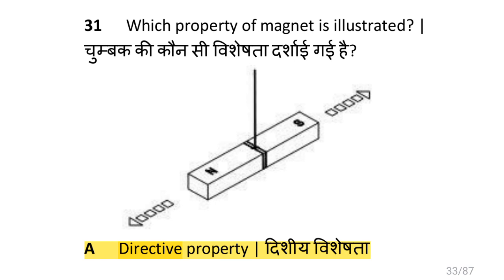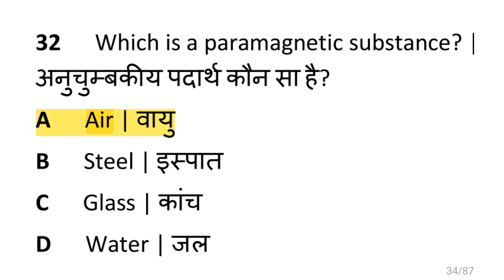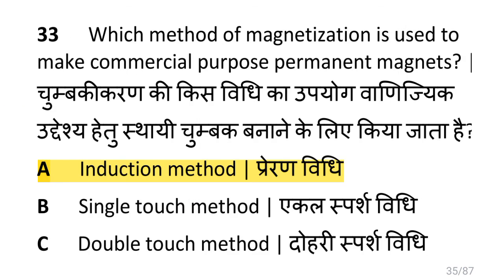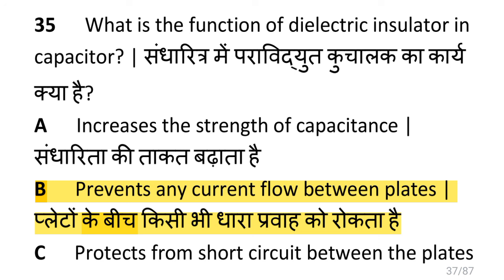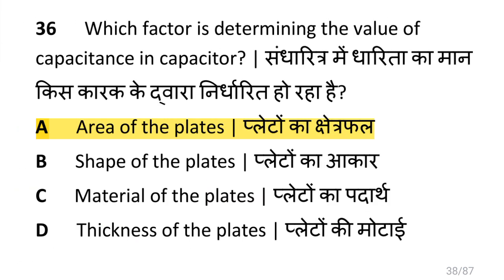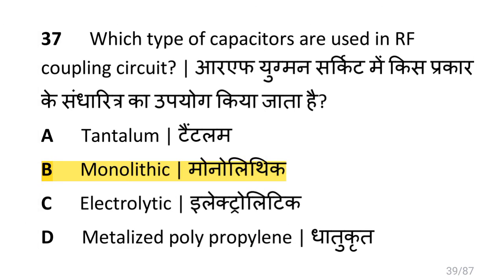What will be the change in the value of capacitance if the distance of the plates is decreased in the capacitor? The value of capacitance increases. Which property of a magnet is illustrated by like poles repelling? That is the direct same property. Which is a paramagnetic substance? That is air. Which method of magnetism is used to make commercial permanent magnets? That is the induction method. What is the effect on inductance if the distance between the turns increases? Inductance also increases. What is the function of the dielectric insulator in capacitors? It prevents current flow between the plates. Which factor determines the value of capacitance? The area of the plates.